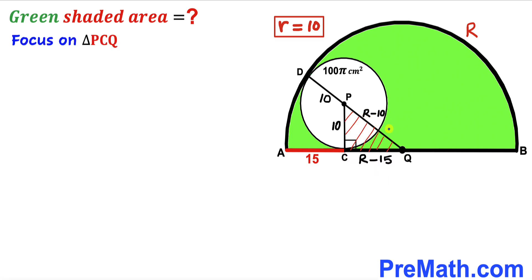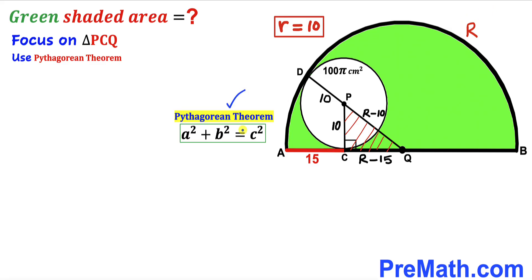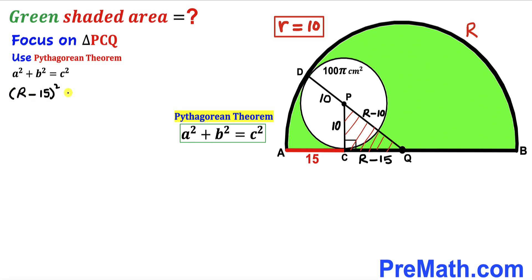Now we focus on right triangle PCQ and apply the Pythagorean theorem to solve for uppercase R. Using a² + b² = c², the hypotenuse is (R − 10), and the two legs are (R − 15) and 10. So we write: (R − 15)² + 10² = (R − 10)².